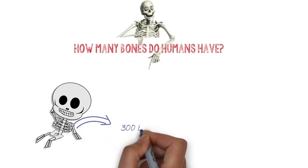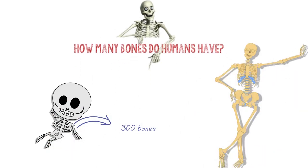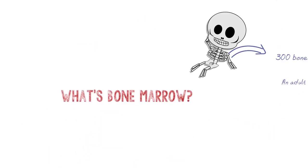How many bones do humans have? When you were born, you had over 300 bones. As you grew, some of these bones began to fuse together. The result? An adult has only 206 bones. What's bone marrow?